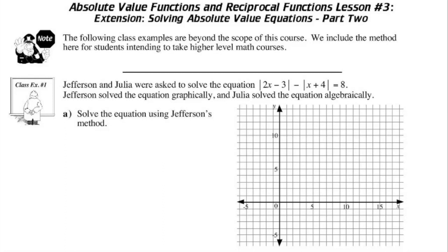So we have class example number one. Jefferson and Julia were asked to solve the equation: the absolute value of 2x minus 3, minus the absolute value of x plus 4, equals 8. A reminder that the absolute value function is what we can call a negative killer. If something is positive, we leave it alone; if it is negative, we change it into a positive. We have a balanced equation, so we can make the left side y1 and the right side of 8 into y2 in the graphing calculator.